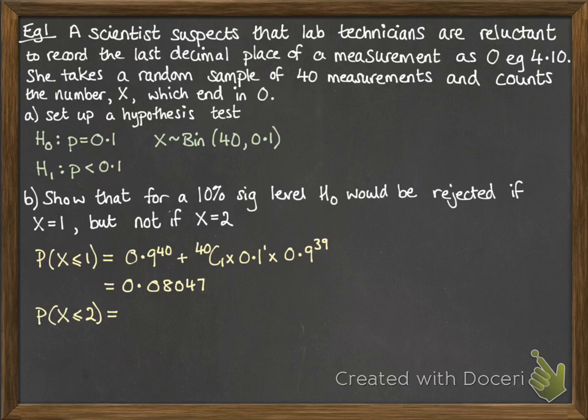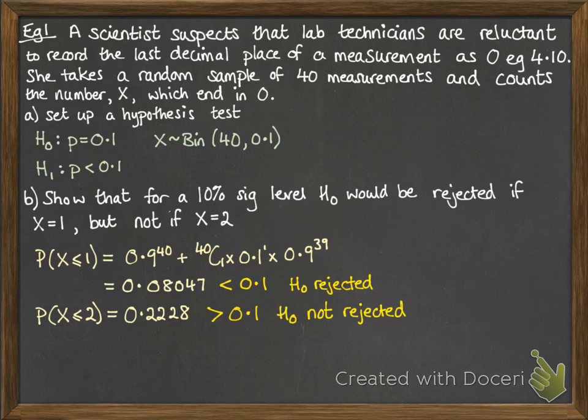The probability that X ≤ 2 is 0.2228. Since 0.08047 < 0.1 (our 10% significance level), the null hypothesis is rejected. But 0.2228 is more than 10%, so the null hypothesis would not be rejected.